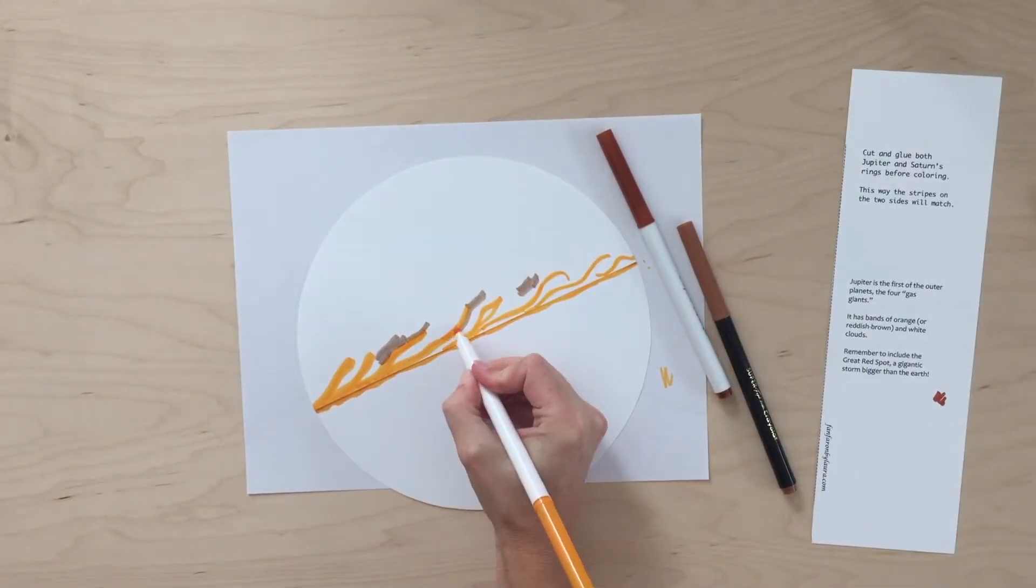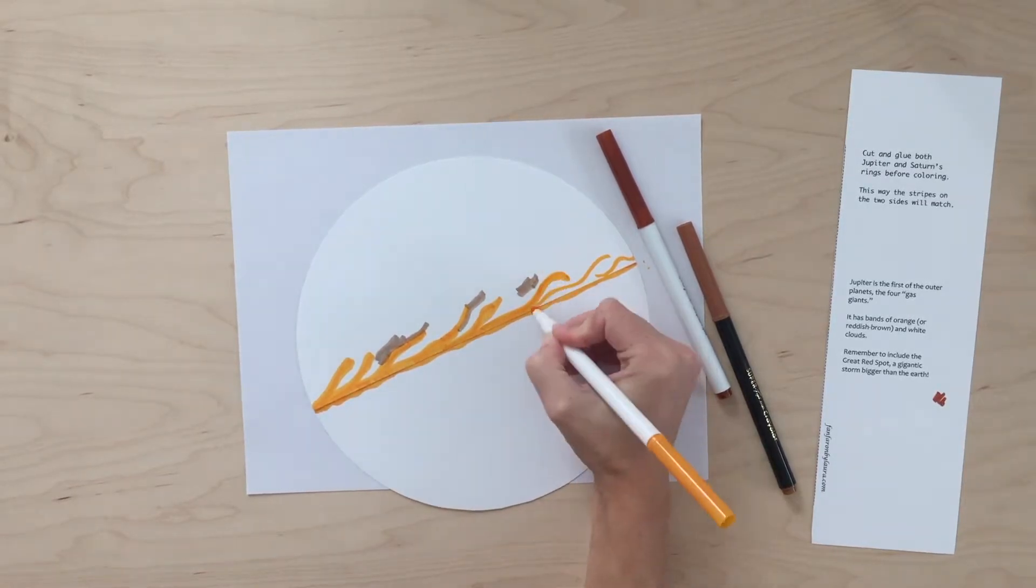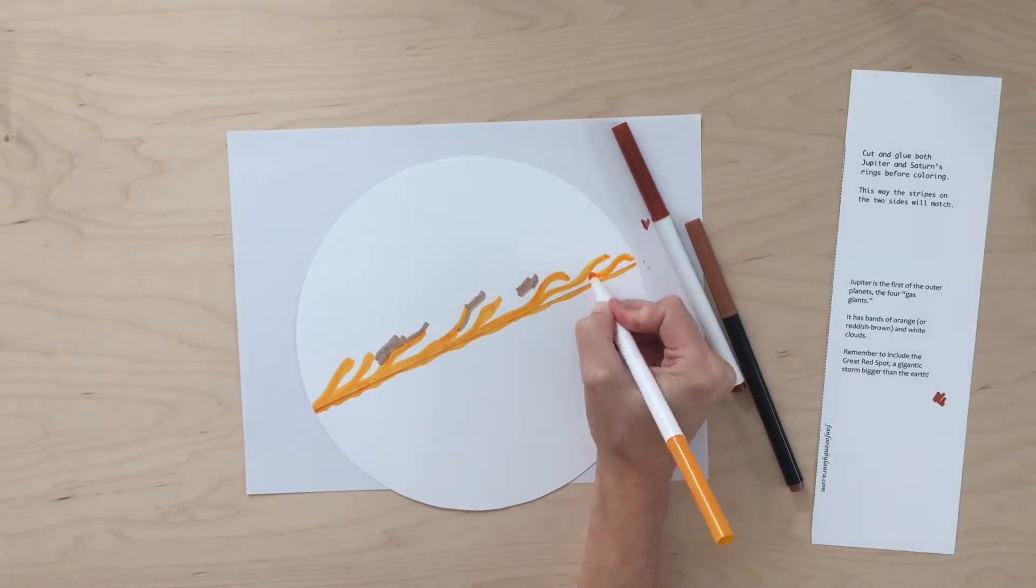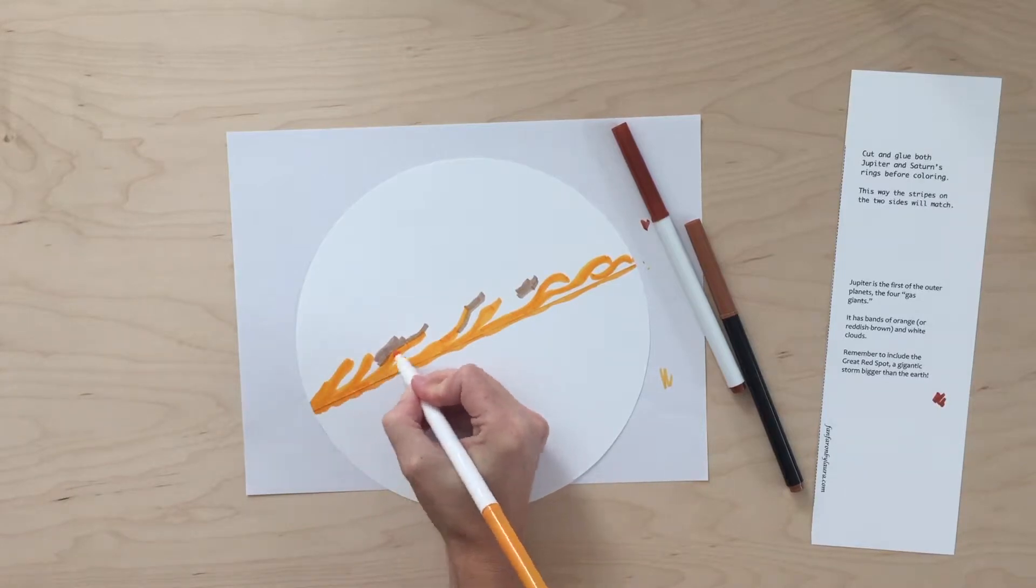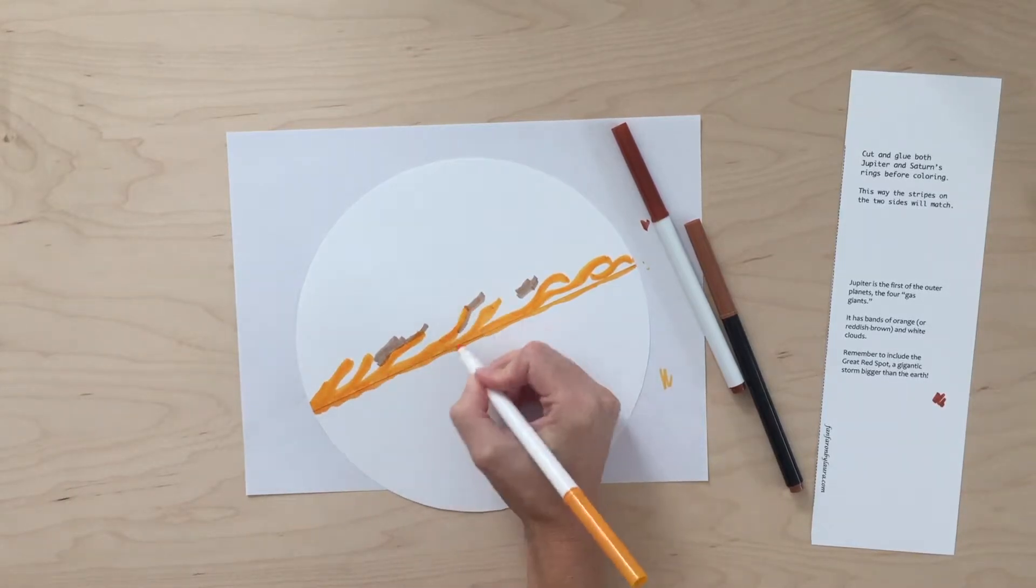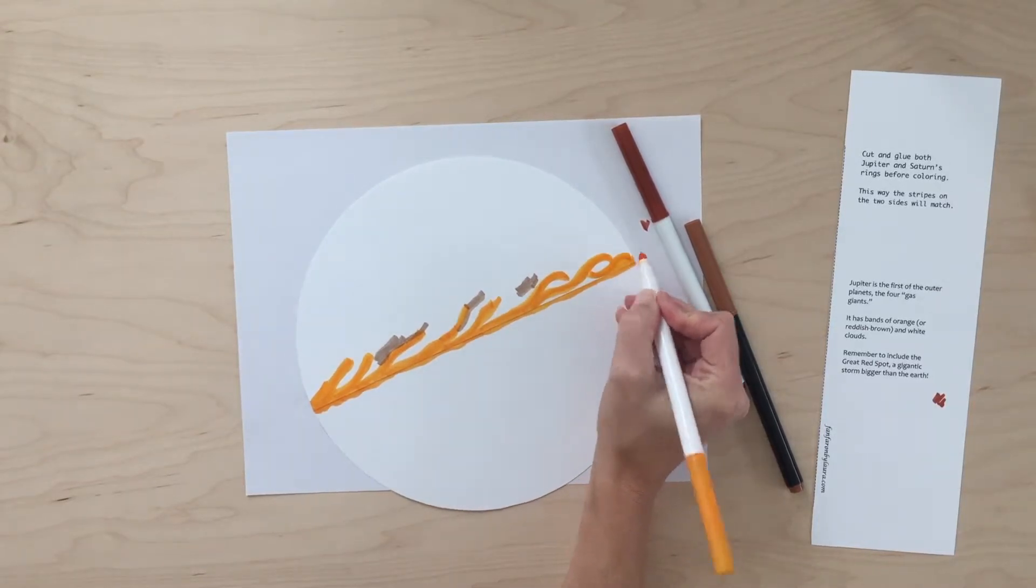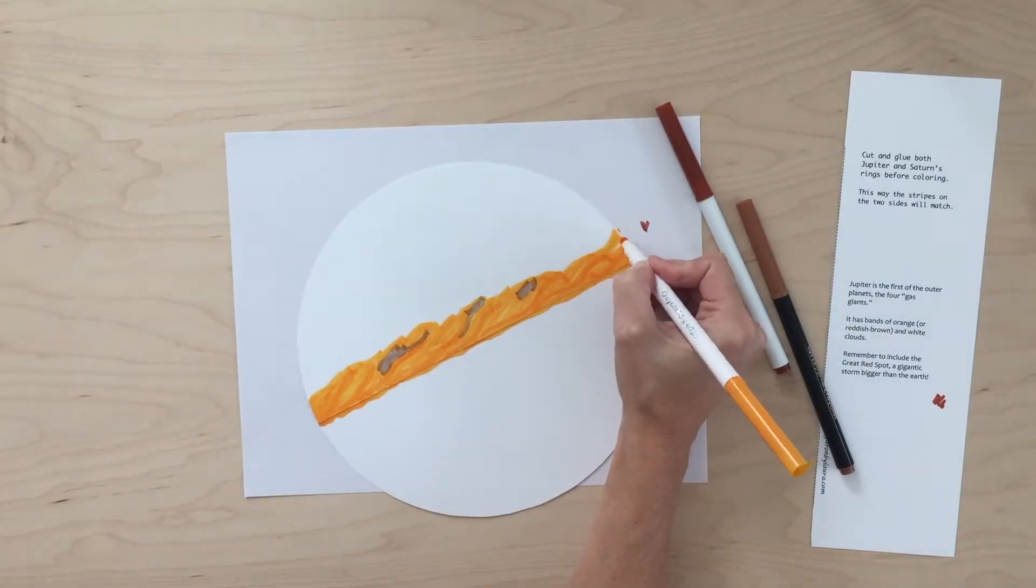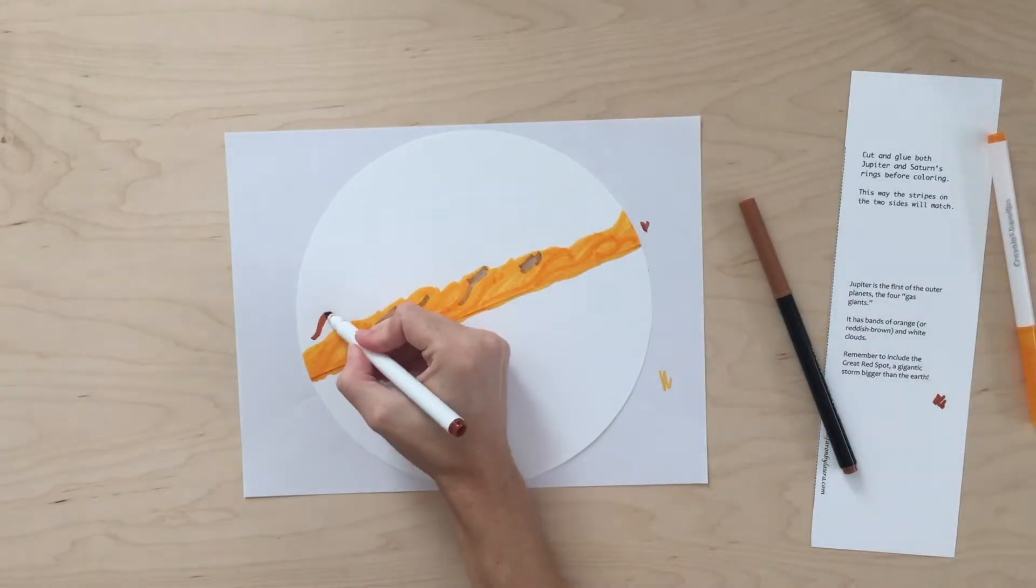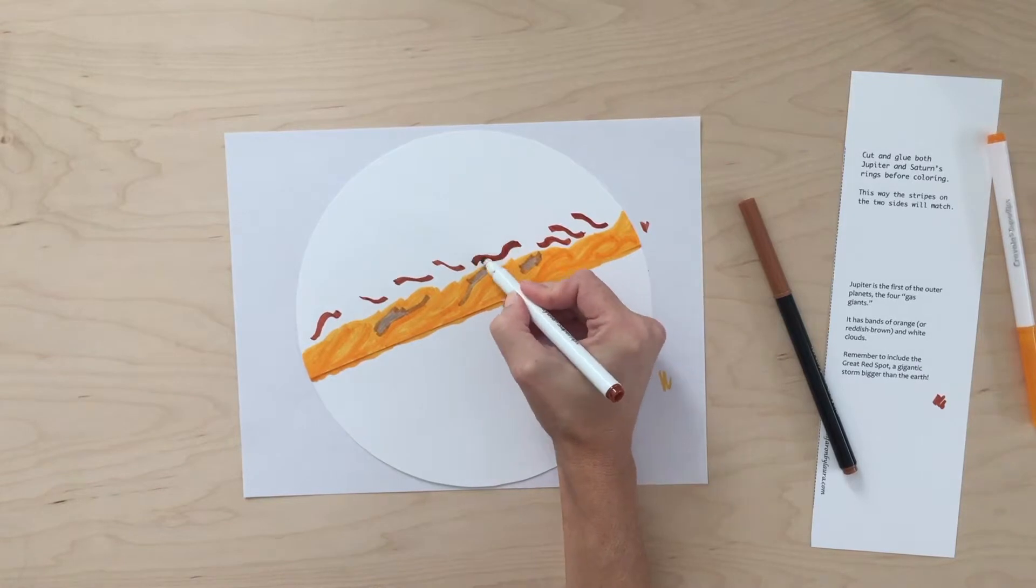I'm actually looking at a picture of Jupiter on my computer right now as I'm coloring it, and I'm noticing that the stripes are swirls of clouds. And so I'm just trying to create some darker parts of the clouds and some lighter parts and just kind of get that impression on my Jupiter here. There's no straight edges, just lots of rounding and oranges and browns, whites and yellows.